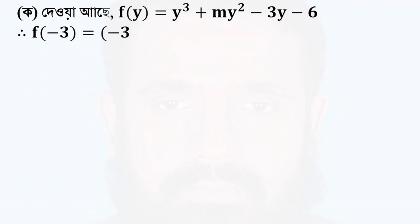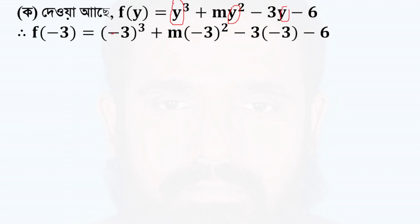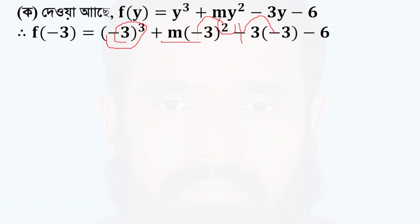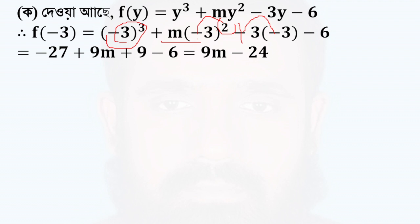2 is equal to 1 minus a. 3 is equal to 1 minus a.